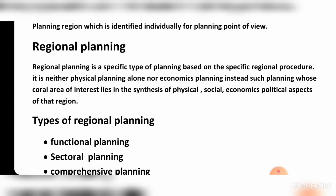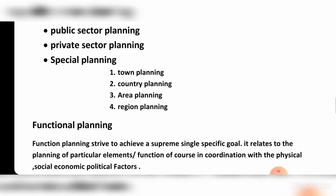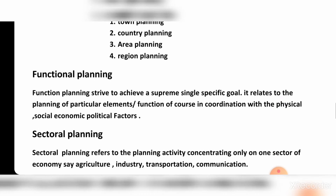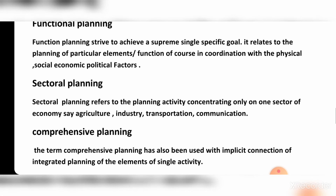The types of regional planning are: function planning, sectoral planning, comprehensive planning, short-term planning, long-term planning, public sector planning, private sector planning, and special planning. Function planning strives to achieve a single specific goal — we focus on one particular element, which we plan with physical, social, economic, and political factors.